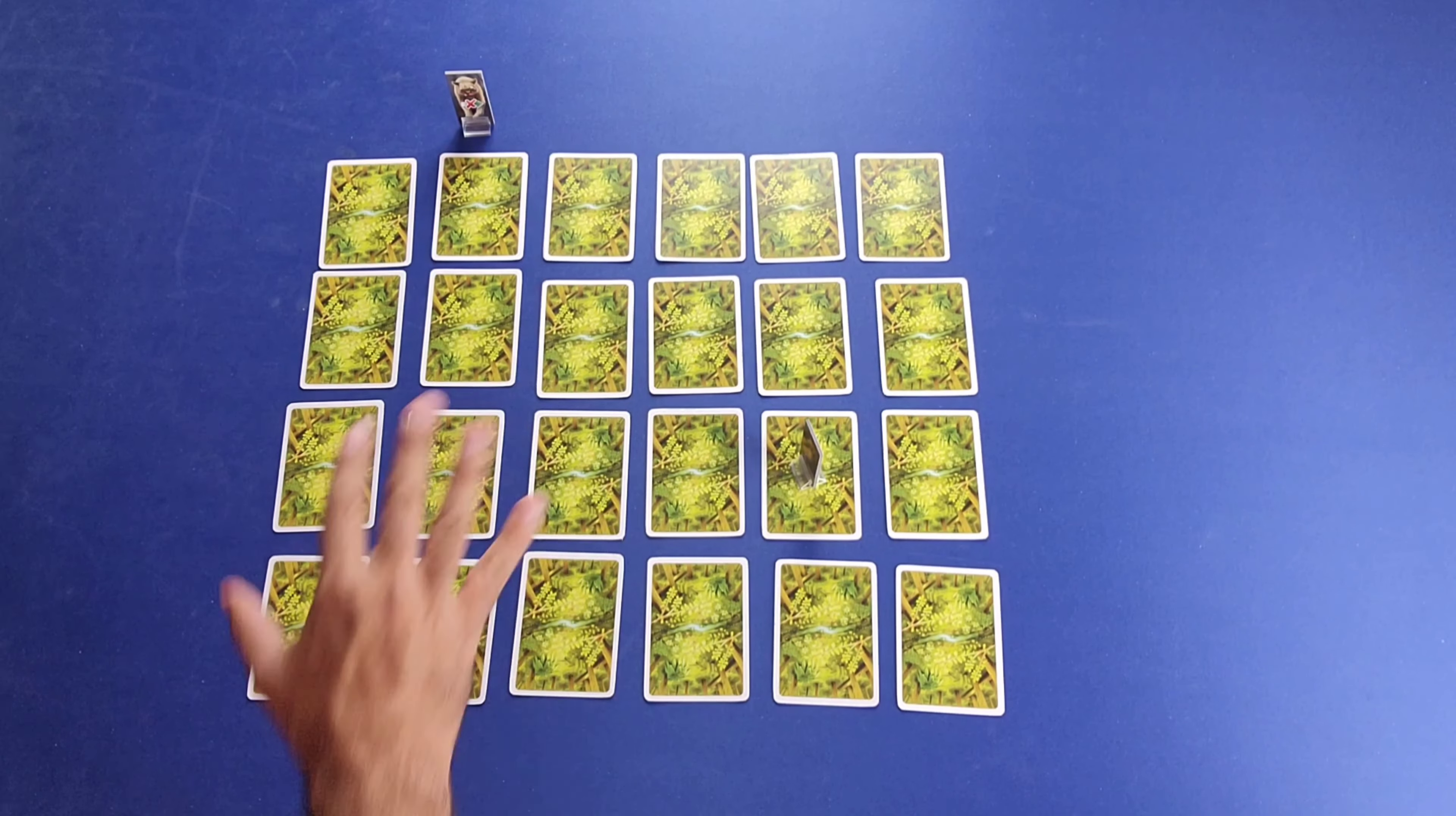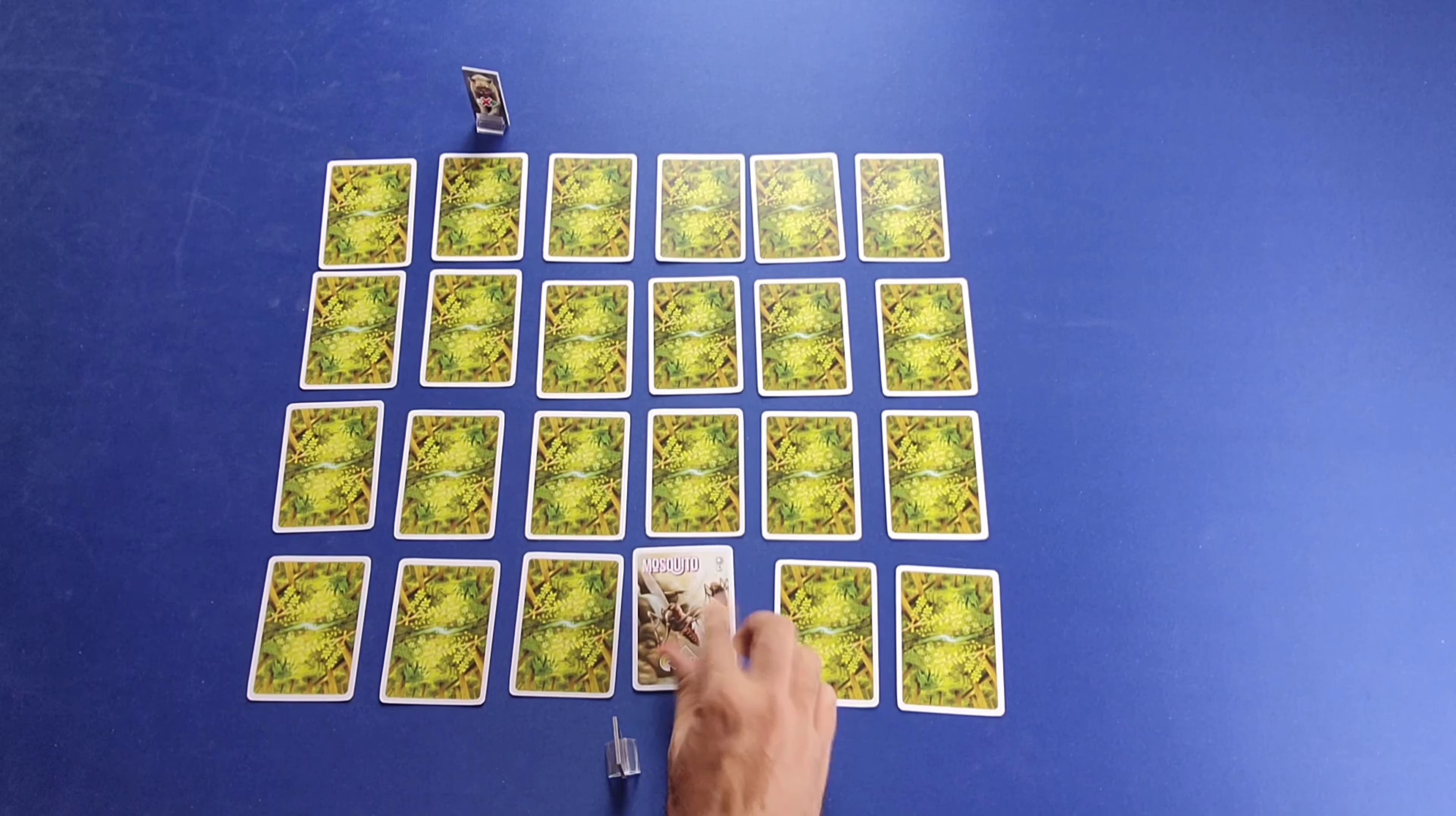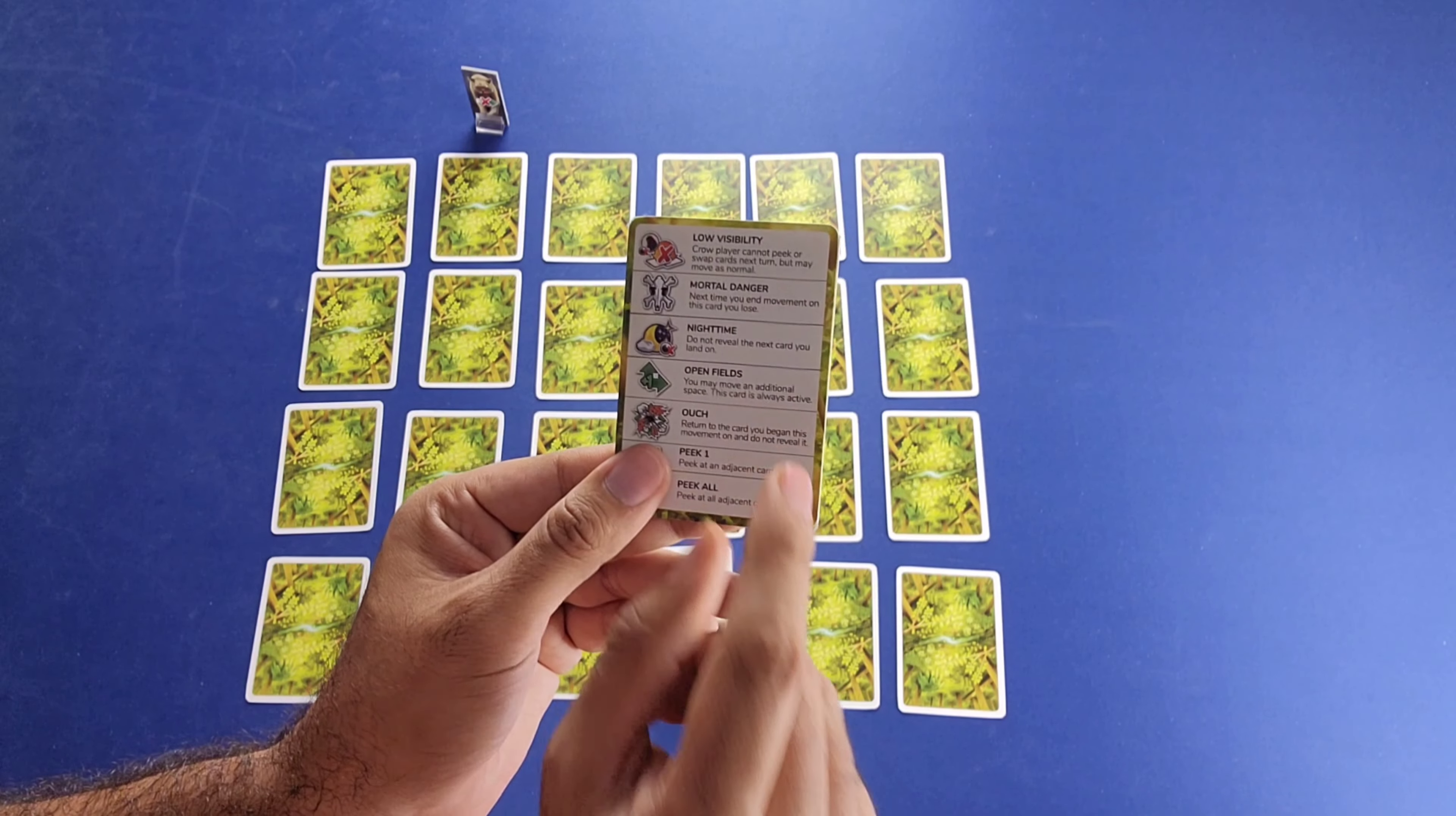We are done with that. And now I'm going to make my movements. And I've got to consider where I move. Because if I end up on this column, the mountain lion is moving there next. And I will lose. So I do not want to do that. So I might want to do one and two. And let's see here. And we've got the mosquito. We're going to use this handy-dandy little icon key here. And we're going to try to find what the mosquito does. And here it says, open fields. You may move an additional space. This card is always active.